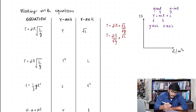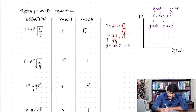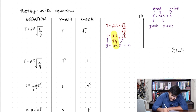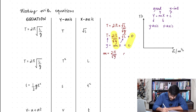Now I have t on the left-hand side of my equation and root l separated out. I've done that so I can compare it with y equals mx plus c. When comparing, I can see that if I'm plotting t on the y-axis against root l on the x-axis, the gradient of the graph equals 2π upon root g. There is no y-intercept because nothing is written afterwards, so the y-intercept is 0.